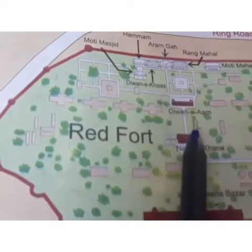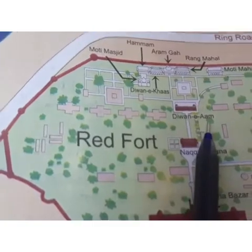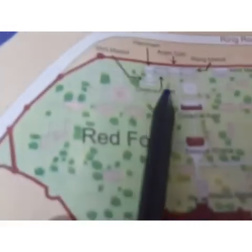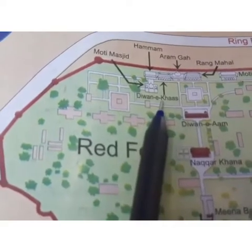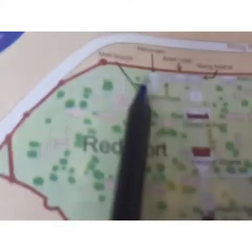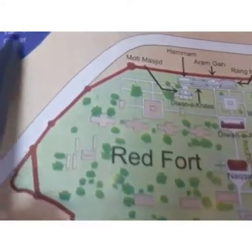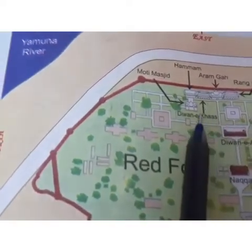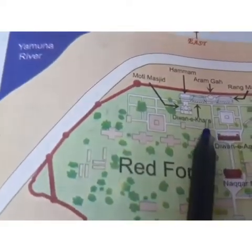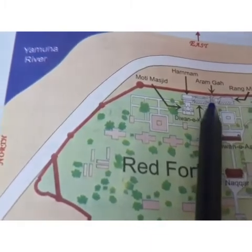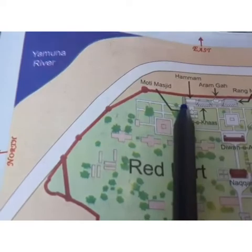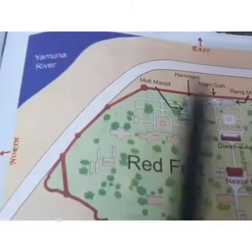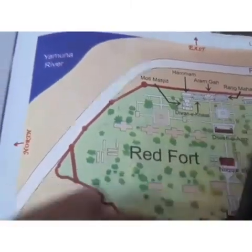You can see here — this is Diwan-e-Aam and this is Diwan-e-Khas. The Yamuna River is closer to Diwan-e-Khas. You can write: Rang Mahal, Aram Kaha, Diwan-e-Khas, and Hamama — three buildings to the left. The Yamuna River is close to Diwan-e-Khas, and this is your Diwan-e-Aam. Now the next question: between which two buildings is Aram Kaha?